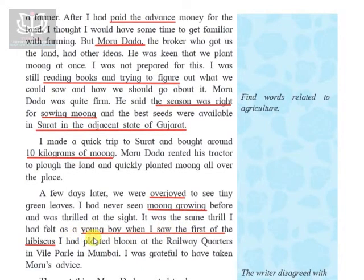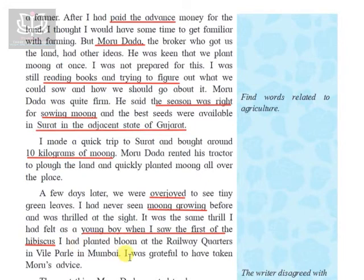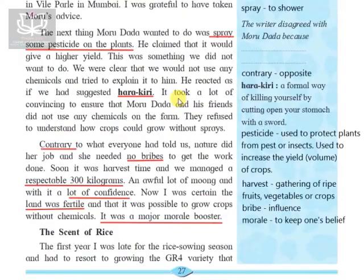Just as when he was a young boy and saw the first hibiscus he had planted bloom at the railway quarters in Vile Parle, Mumbai, he was grateful to have taken Morudada's advice. As a farmer, he had now seen his moong growing. The next thing Morudada wanted them to do was spray some pesticide on the plants.